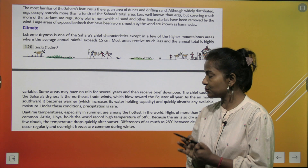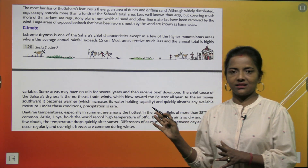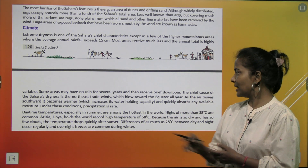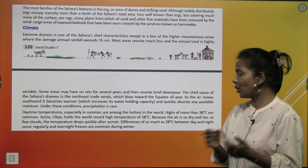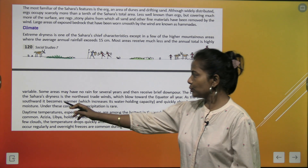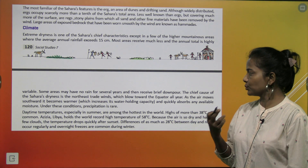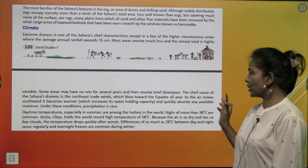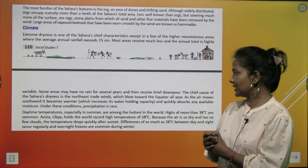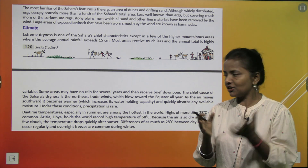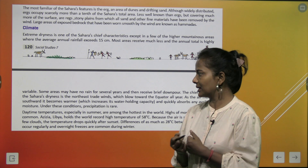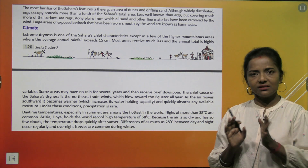The chief cause of the Sahara's dryness is the north-east trade winds, which blow towards the equator all year. As the air moves southwards, it becomes warmer, which increases its water-holding capacity and quickly absorbs any available moisture. Under these conditions, precipitation is rare.